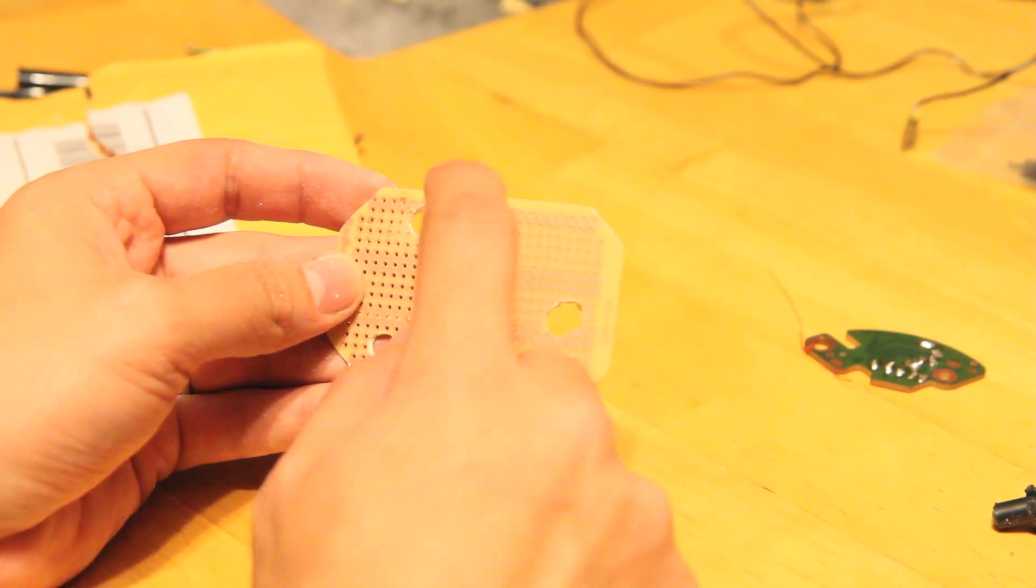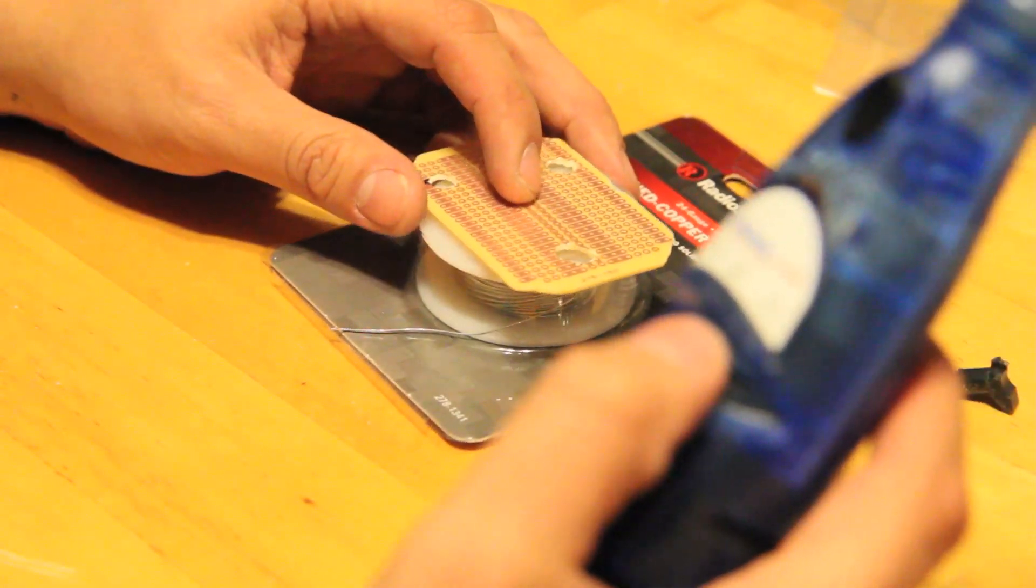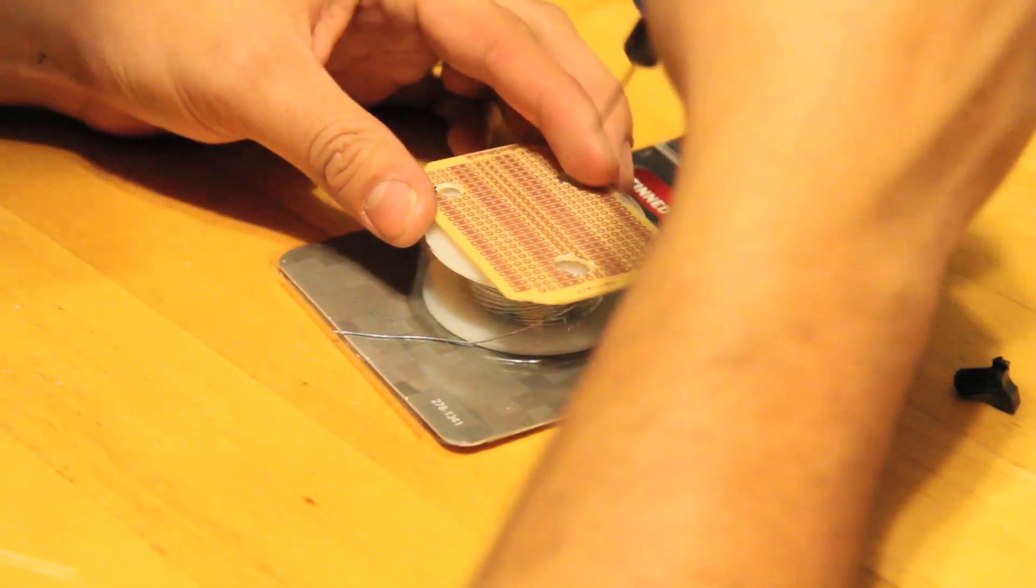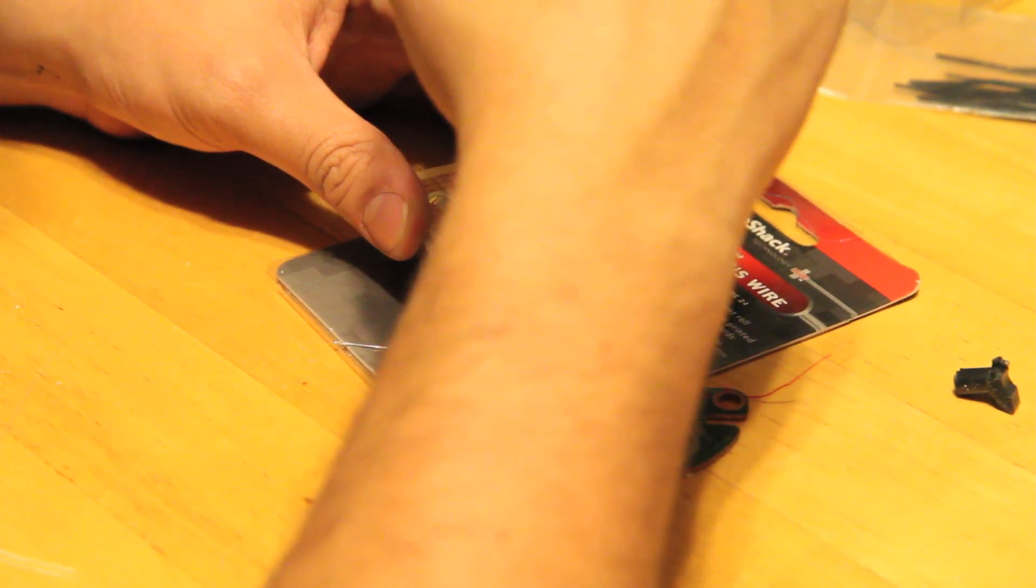The next thing is of course you're going to want to get some washers. The next part, and you will need a Dremel for this, is to drill a center hole with a tiny blade or a bit, I mean, so you can put the cables right through it.